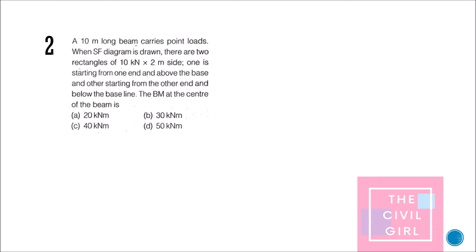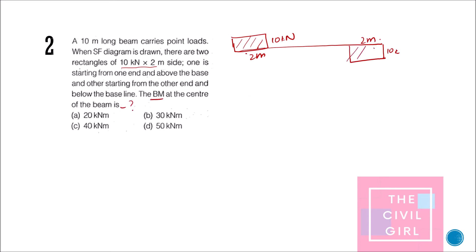Next question: a 10-meter long beam carries two point loads. When the shear force diagram is drawn, there are two rectangles — one of 10 units over 2 meters starting from one end and above the baseline, and the other below the baseline at the other end. We need to find the bending moment at the center. Since shear force exists at the ends, we can identify this as a simply supported beam.